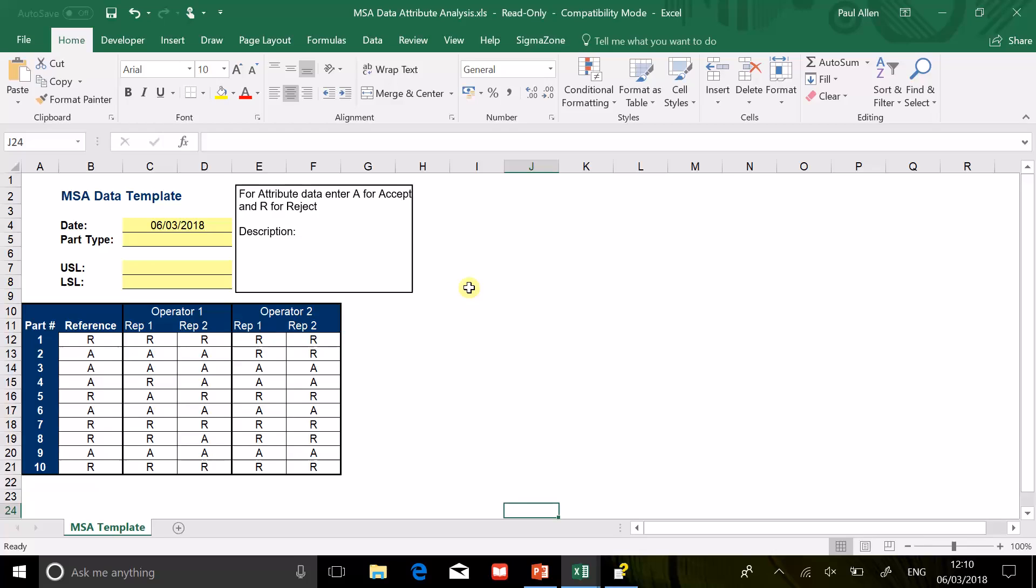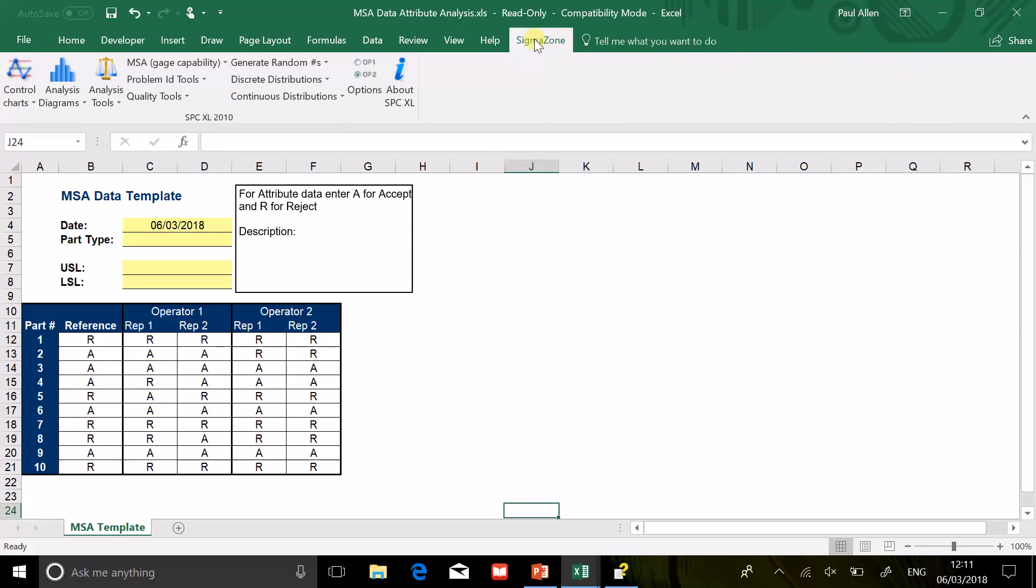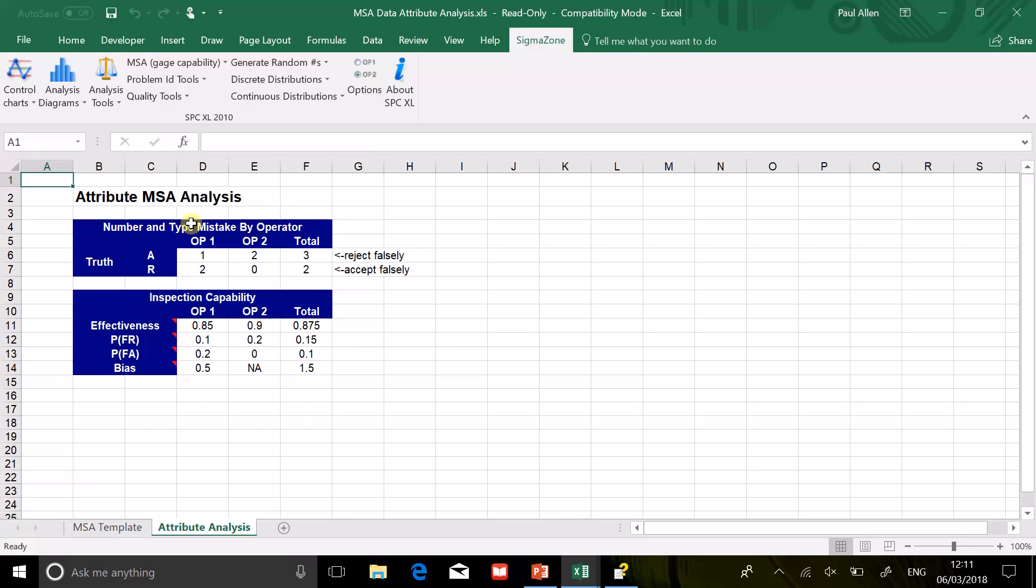So there's the completed MSA. Most important that you mix the parts up, that you give them back to the operator in random order. Don't give them out in the same order the second time. Just make sure that the operator has no memory of the previous assessment of a particular part to keep away as much bias as possible. They should be able to judge each part uniquely. Then if we go Sigma Zone, MSA Gauge Capability, Attribute Analysis, it'll work out those statistics.